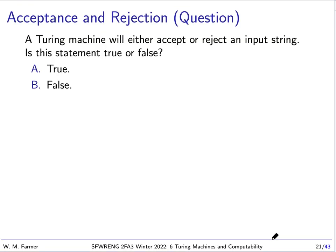Here's a question: a Turing machine will either accept or reject an input string — is this statement true or false? Actually, it is false. A Turing machine has three possibilities when you run it on a string: it can go into the accept state and therefore accept, it can go into the reject state and therefore reject, or it may never reach either state and the Turing machine just runs forever. So Turing machines have these three possibilities.